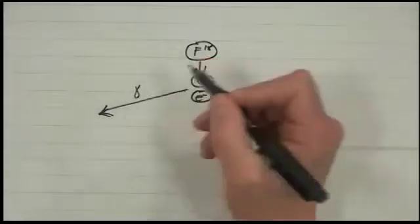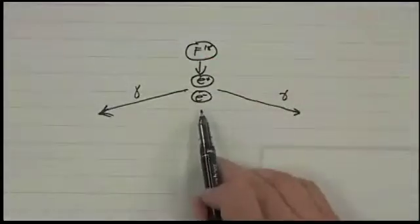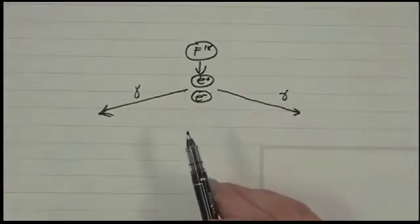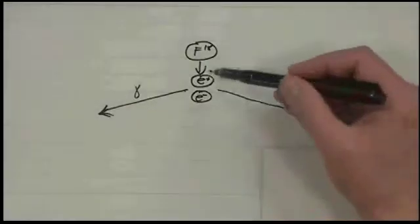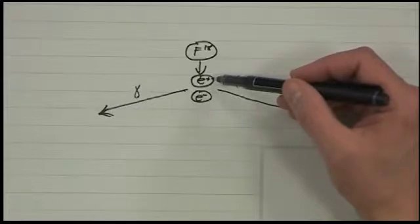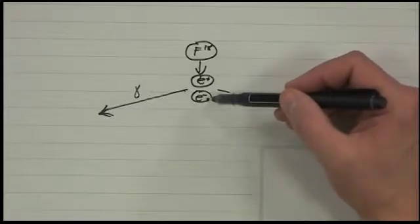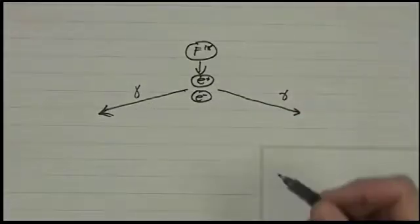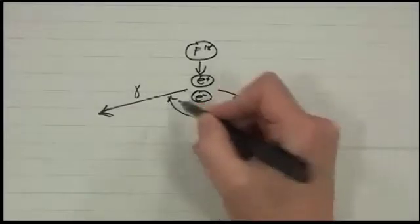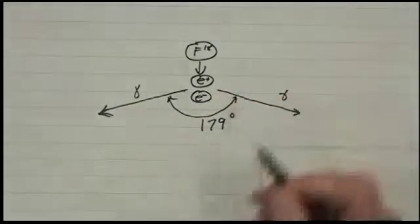So this is gamma and gamma. Okay. But the momentum of the gamma particles is not exactly zero, because the positron had some momentum when it annihilated with the electron. So this angle here is approximately 179 degrees.